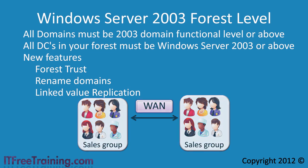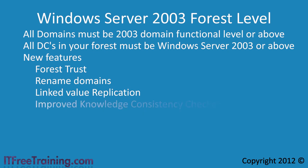The fourth feature of the Windows Server 2003 forest level is an improved Knowledge Consistency Checker. I will cover this in more detail later in the course, but for now you need to know that the job of the Knowledge Consistency Checker, or KCC, is to create links that allow multi-site replication over WAN links to occur. The KCC in Windows Server 2003 has been improved, making it better at handling large Active Directory deployments over more sites.